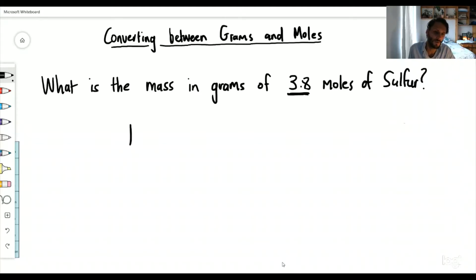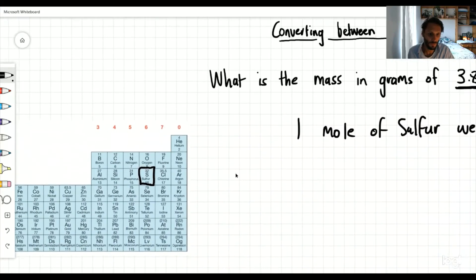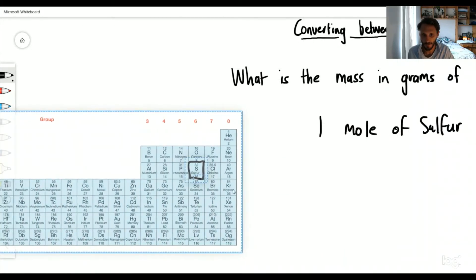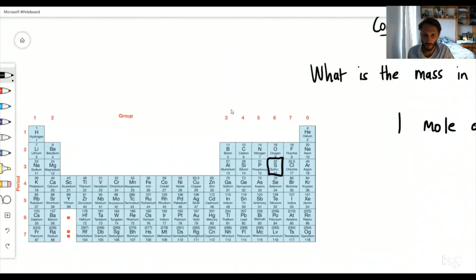First thing you're going to do is work out what is one mole of sulfur, what does that weigh? You can look at your periodic table. All of this information on the periodic table is giving you one mole of each of these elements and how much it weighs.